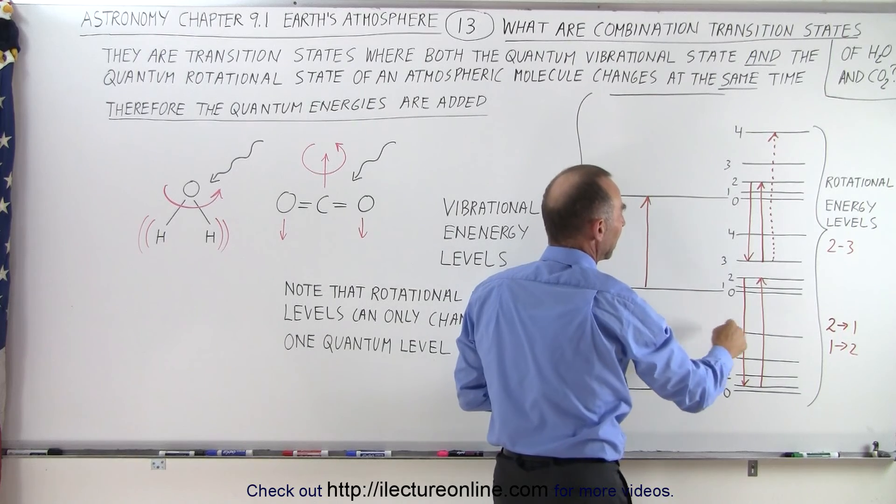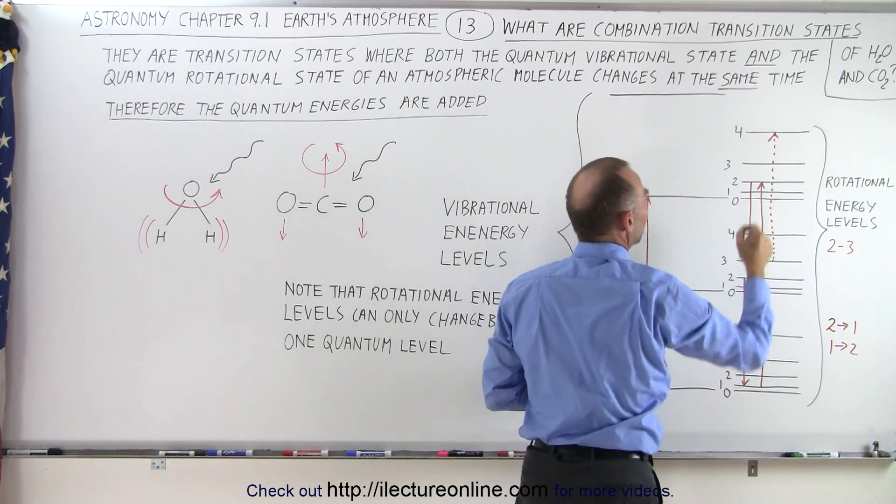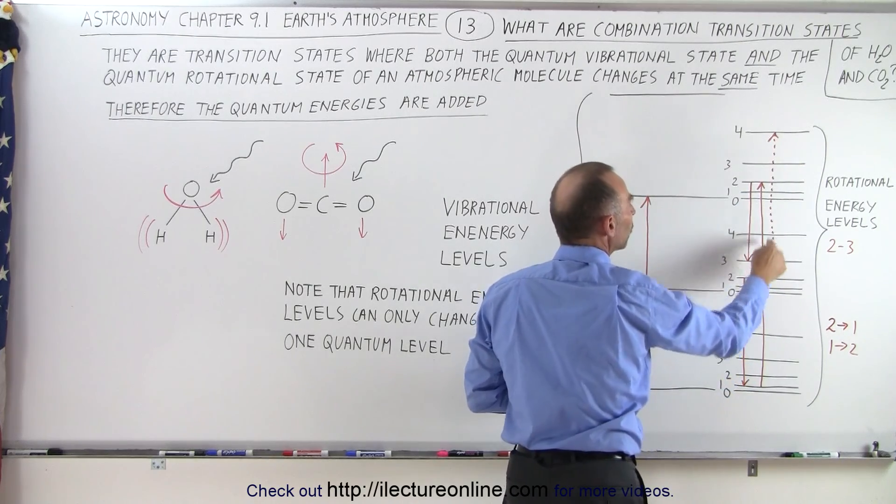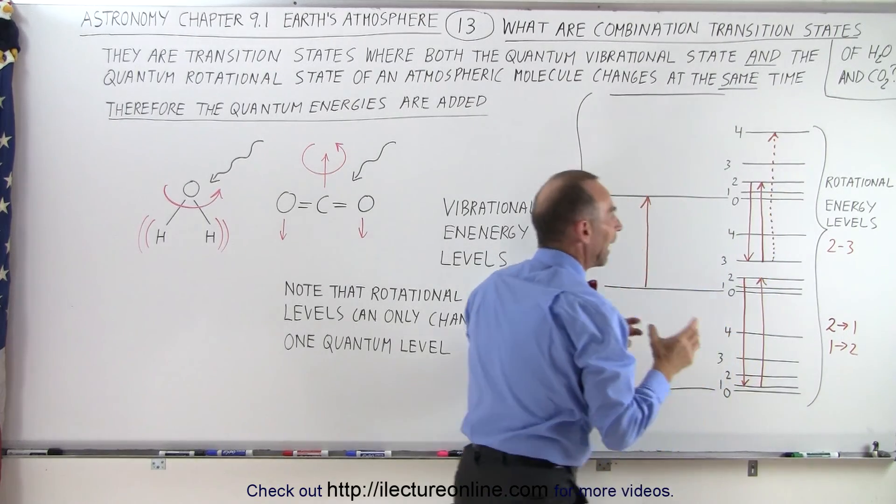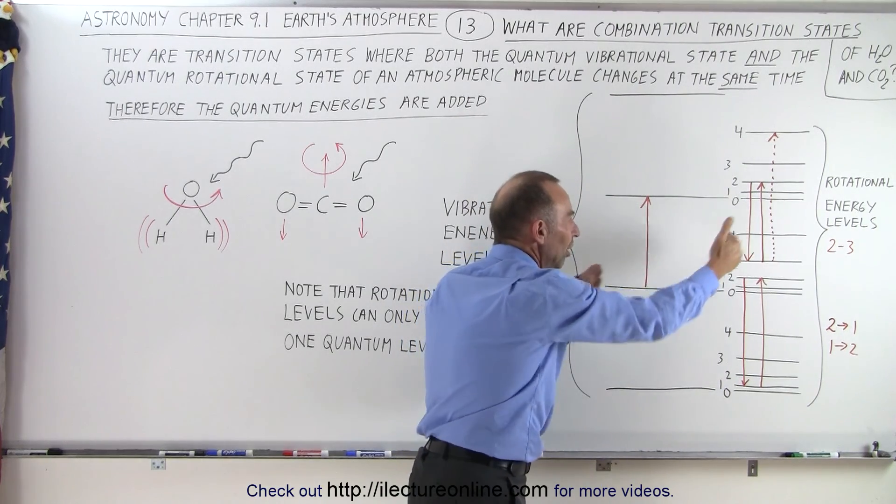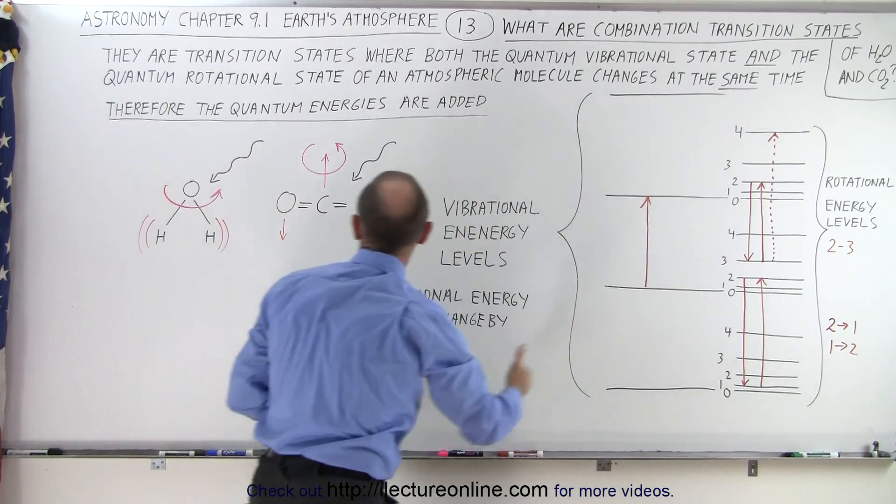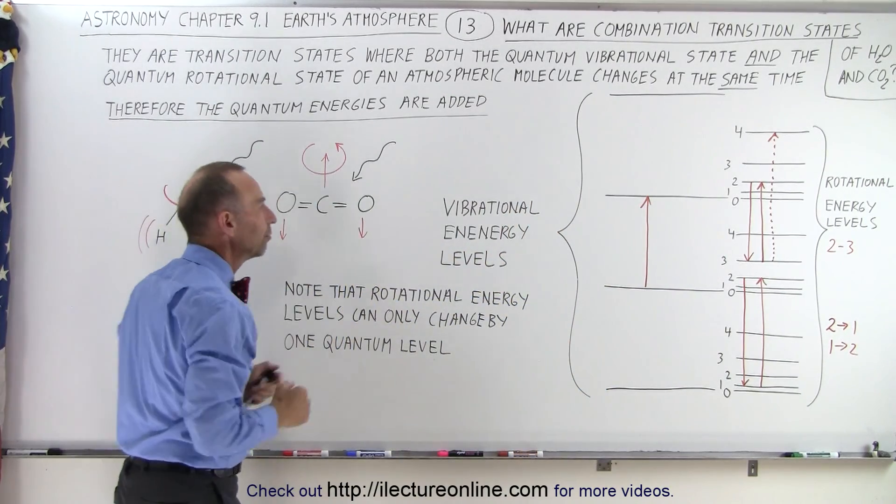So for example, it could jump from the third level in this state to the fourth level in this state, or it can jump from the third level to the second state in that level, and because of that we can then add these two changes in the energy, these are quantum changes, and together they make the change in the energy of the molecule.